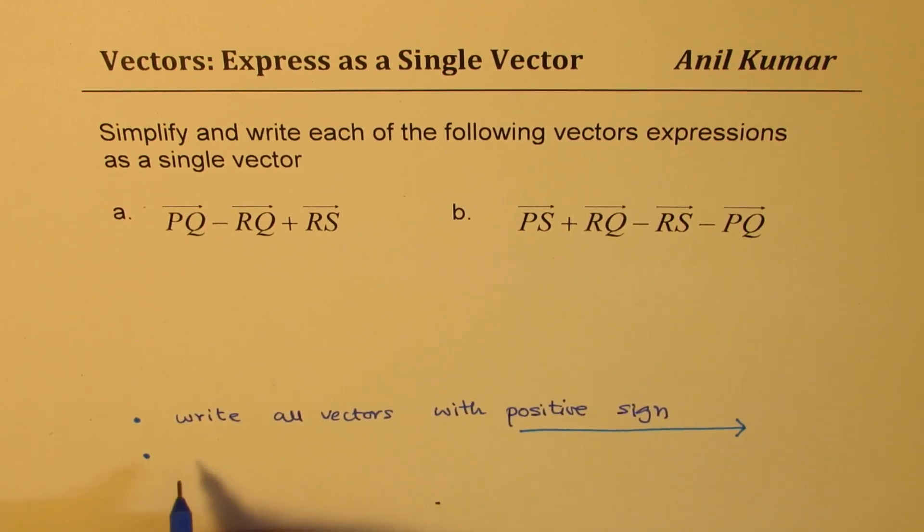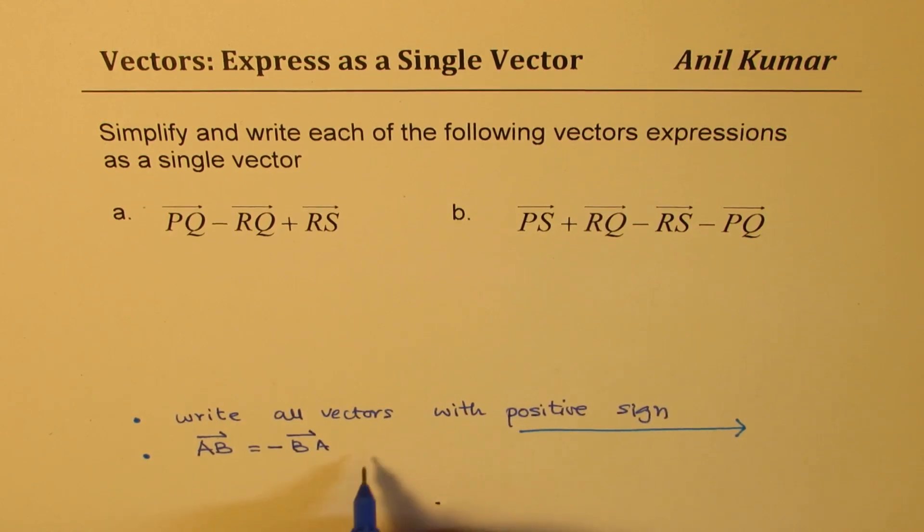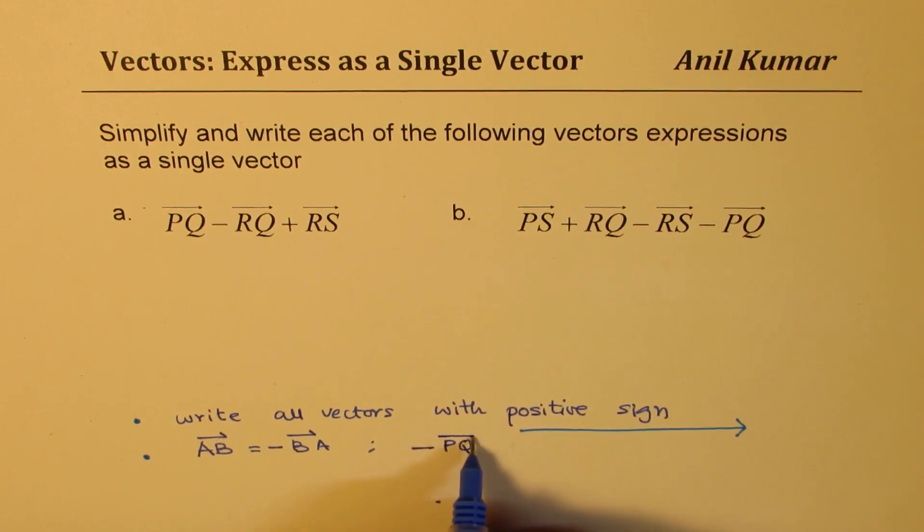Second, what you should know is that if I'm writing vector A to B, it means if I want to change this to B to A, then it will be with a negative sign since the direction reverses. Normally, if you're given vector P to Q with a negative sign here, then it really means I could write this as positive Q to P. So that is the kind of change which you have to make.